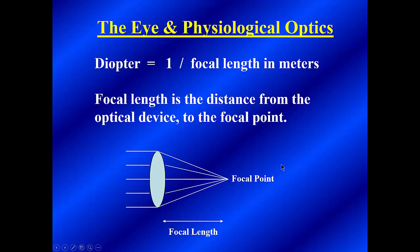So let's take a look at a diagram. A diopter would be equal to one over the focal length in meters. Focal length is the distance from the optical device to the focal point. So if we pretend for the moment that this is your cornea, and light is coming in from the left side, this will be a lens that's going to effectively refract or bend the light to some kind of a focal point. The distance from here to here is the focal length. One over the focal length is a diopter.